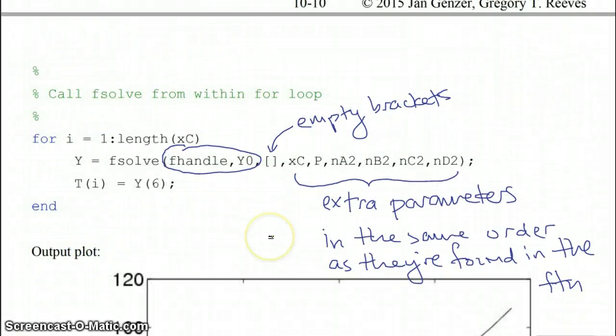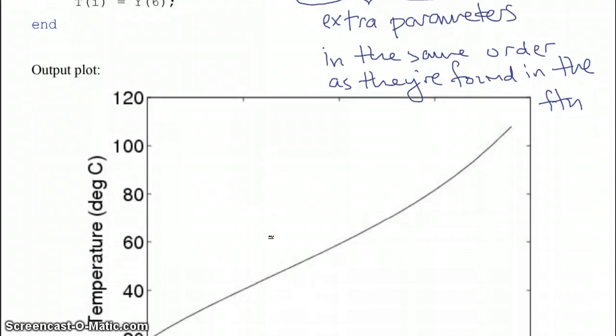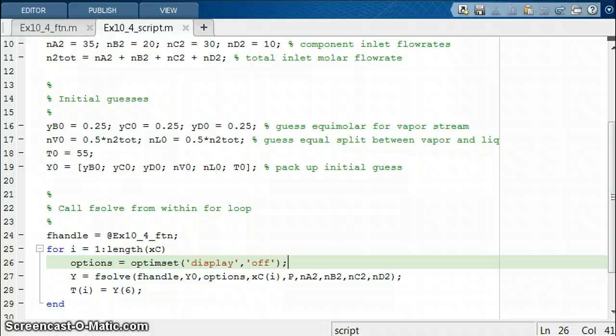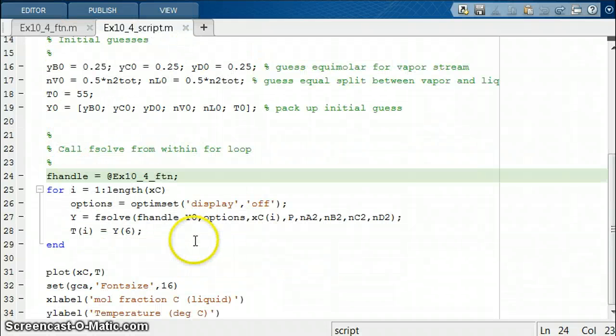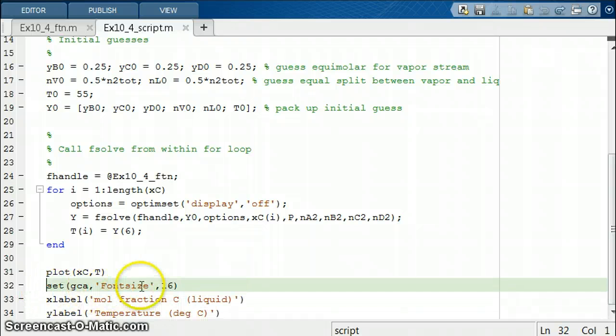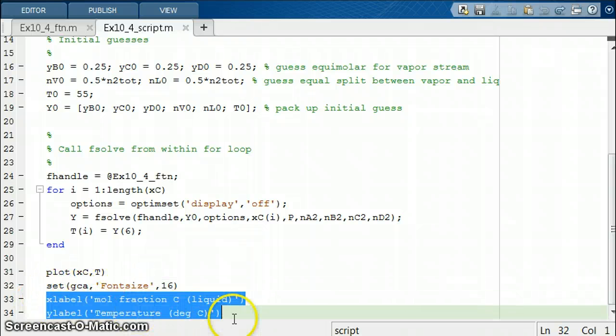Just to finish this up, to go back to the lecture notes, here is what the plot looks like in the lecture notes, which you can all see for yourself. And in the script, at the bottom of the script, this is how the plot looked and all the commands looked so that I made it pretty. I increased the font size and I gave it an X label and a Y label.